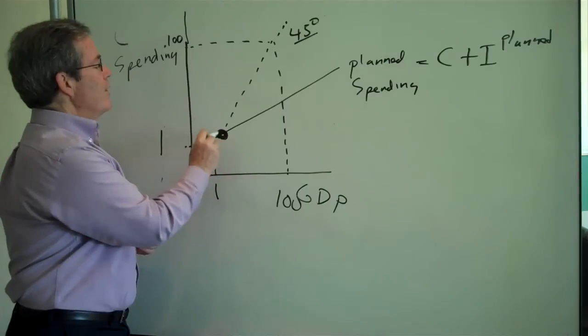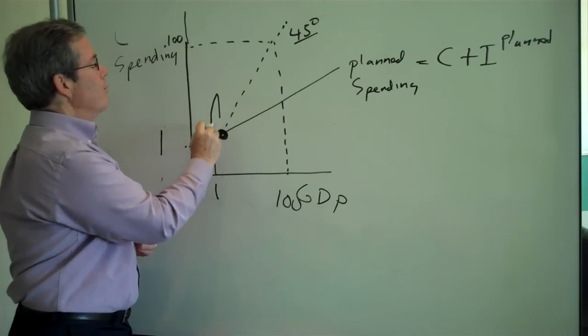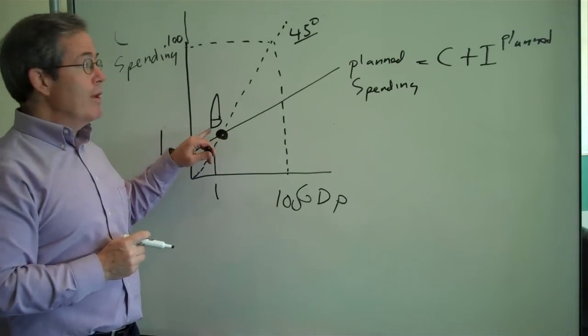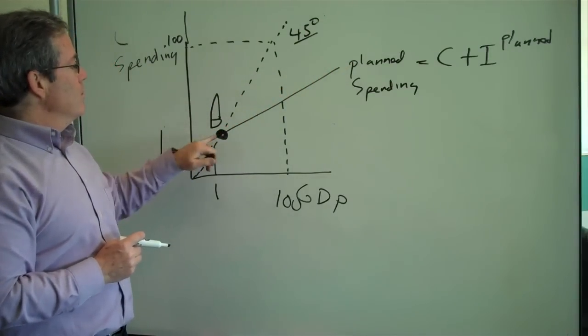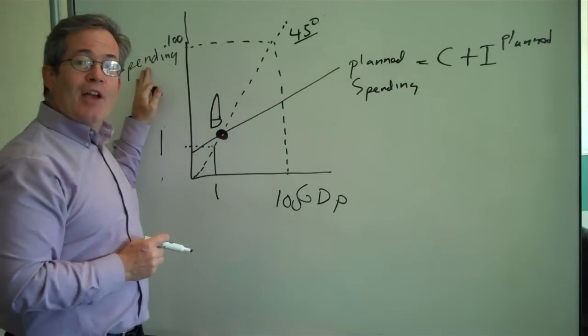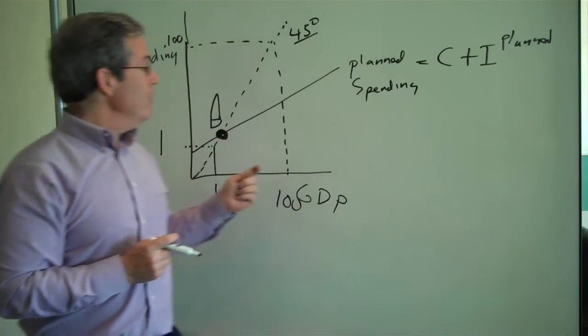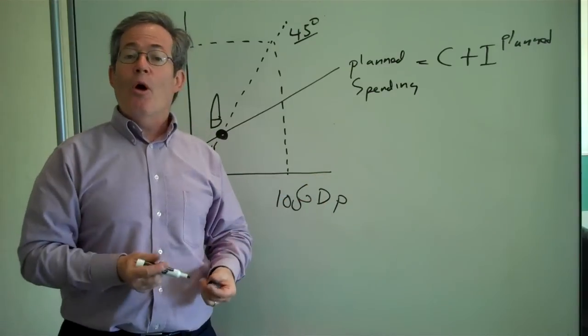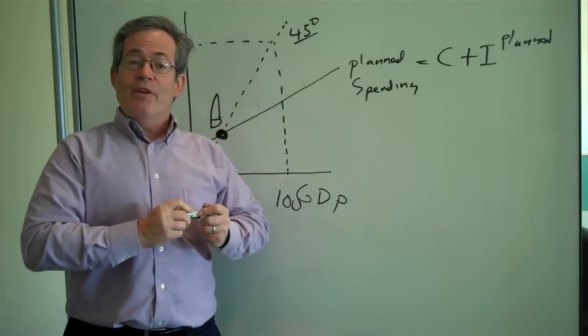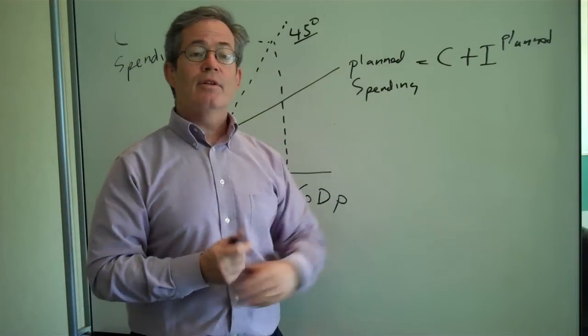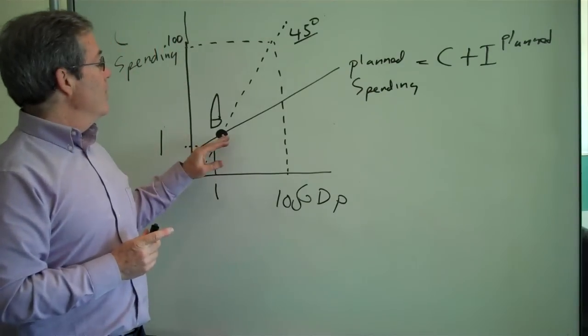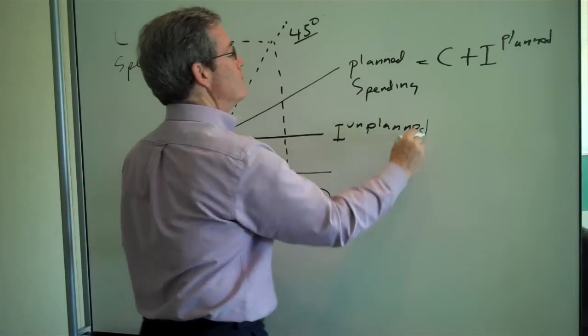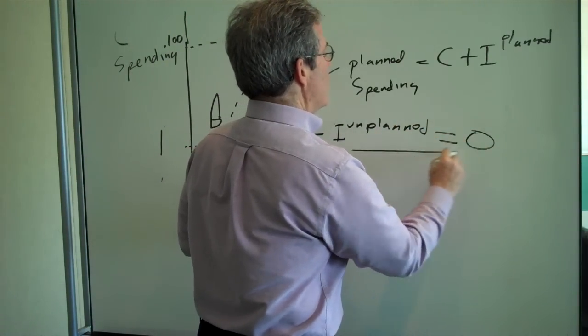And here's the key point, right here. We'll call it point B. What's true at this point? Well, the planned spending is equal to the actual spending. So, at this point, where the planned spending line crosses the 45 degree line, there's no unplanned spending. No unexpected events for investors. What they forecast they can sell when they invest, they can sell. So, at this point, unplanned investment is equal to zero.